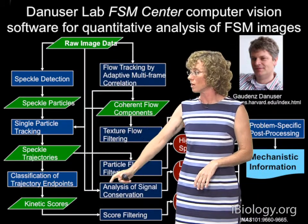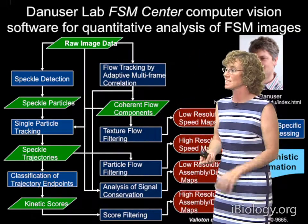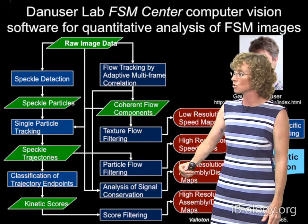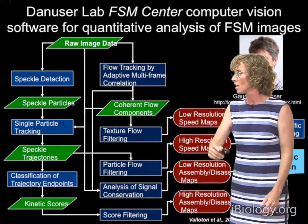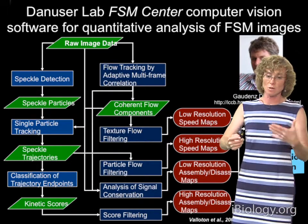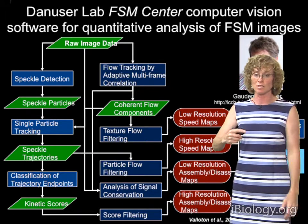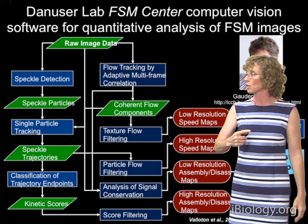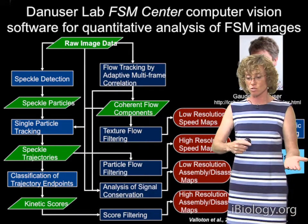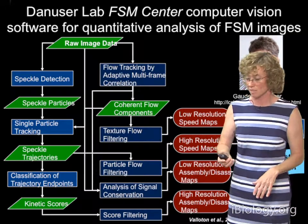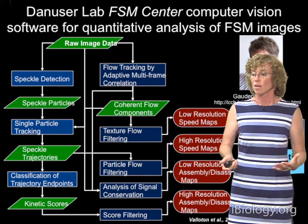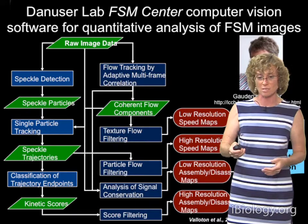Each one of these parts of the flowchart represents an algorithm that he's written, allowing both low-resolution and high-resolution speed maps, and low-resolution and high-resolution assembly/disassembly maps. By thinking about the problem — for example, that actin only moves in retrograde flow in one direction at the leading edge — you can have some problem-specific post-processing. Then you do molecular perturbations, compare two different states of a cell, and get mechanistic information about how signal transduction cascades and molecules control the motion and dynamics of the actin cytoskeleton.